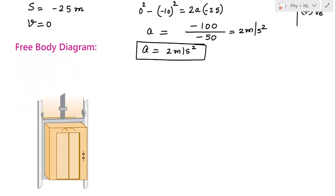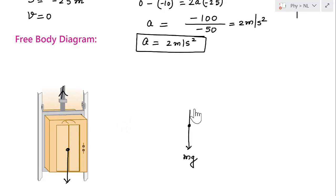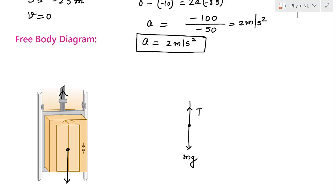Now, with acceleration known, we draw the free body diagram. The forces acting on the elevator are: mg acting downward (the weight), and tension T from the cable acting upward. We assume no friction between the elevator and the steel rails. Applying Newton's second law in the y direction: the sum of forces equals mass times acceleration. Acceleration is in the upward direction with magnitude 2 m/s².